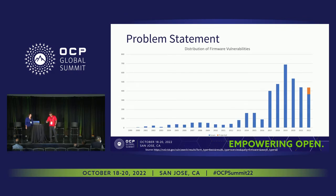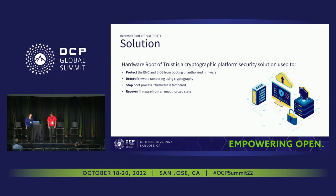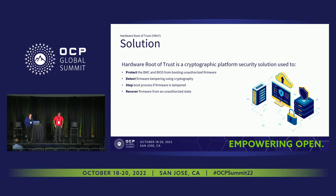Looking at the history of firmware vulnerabilities, recently the number being found is more and more, and we need a solution. That solution is implementing hardware root of trust. Basically, hardware root of trust means: protect, detect, and then recover — and stop the server from running if there is no way to recover. Protect means during BIOS and BMC running state, preventing any unauthorized access to the SPI flash where there is a chance of attack.